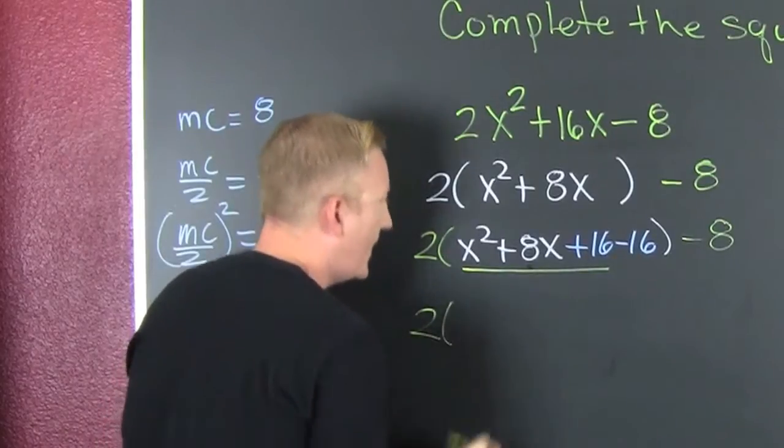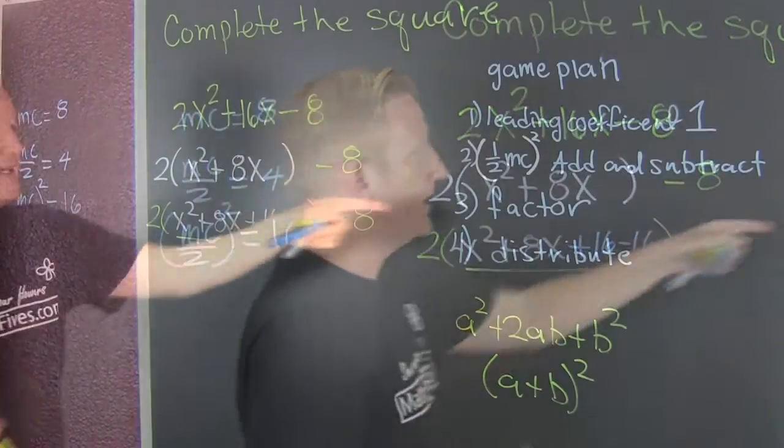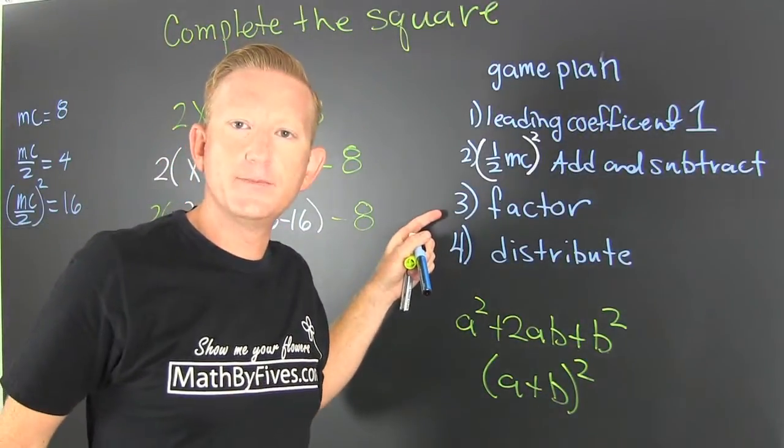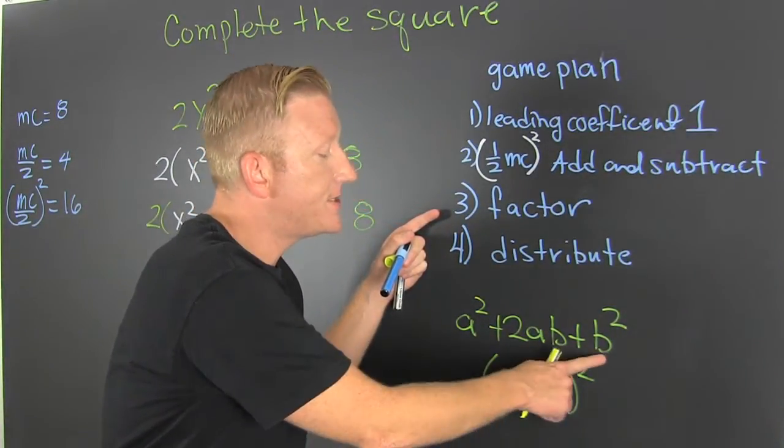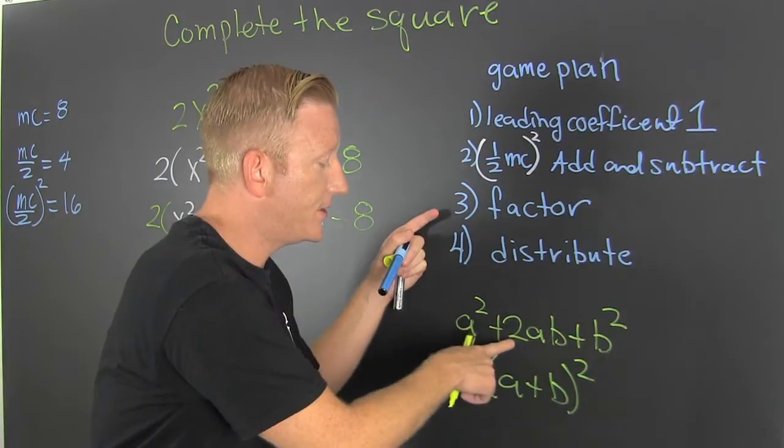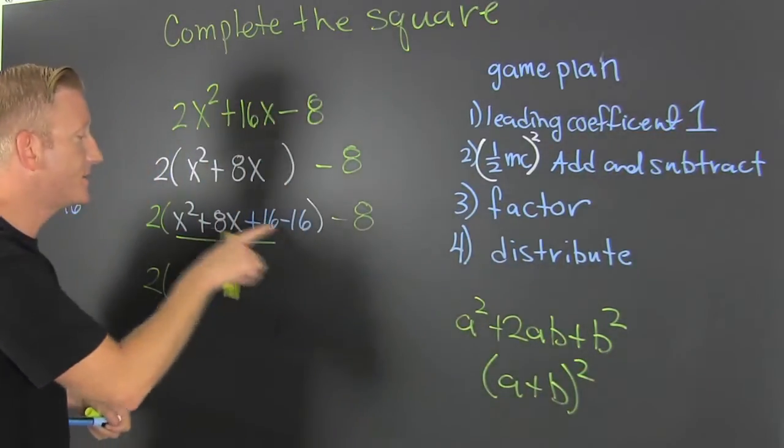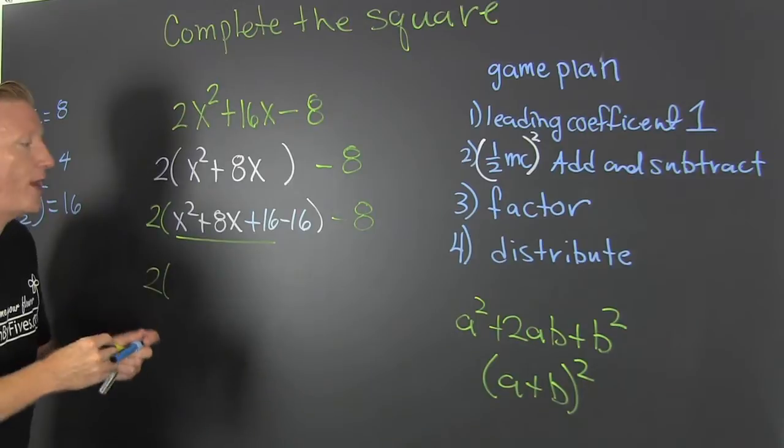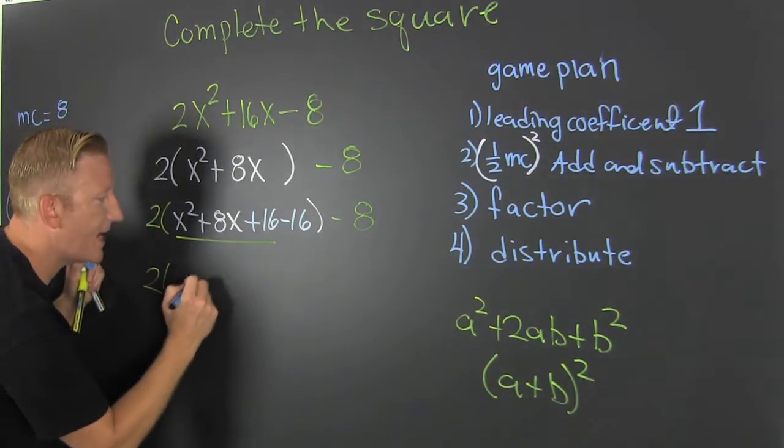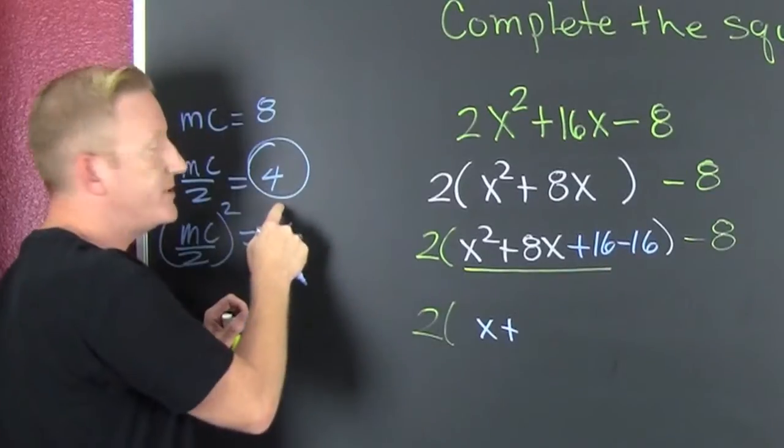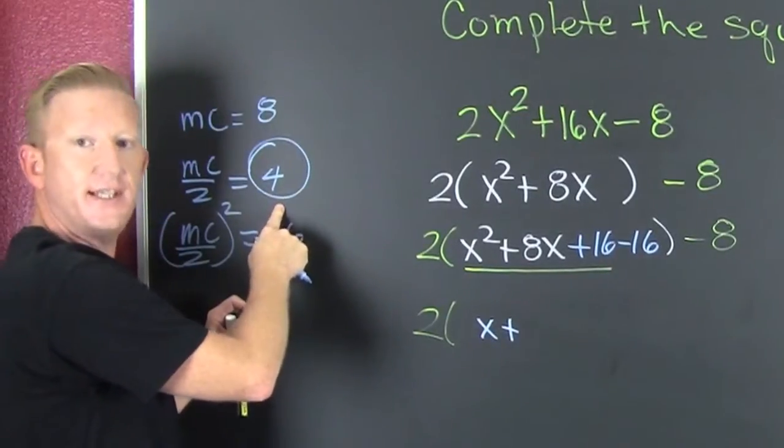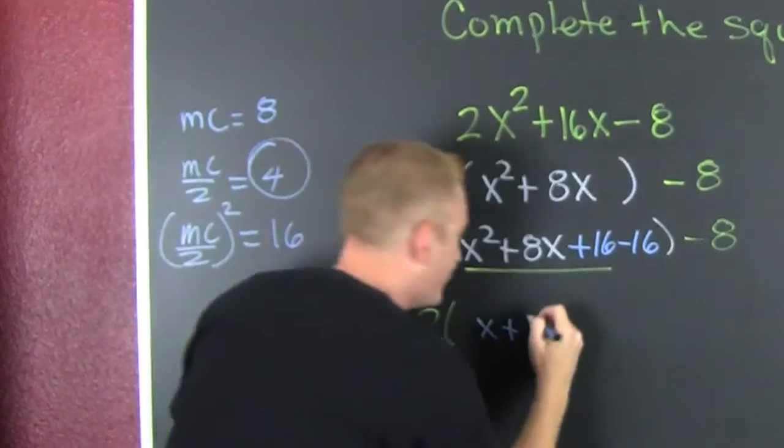This is two times - this is the part where we're factoring. We're factoring that perfect square. It's the square of this doubled. That's x plus what? The middle coefficient over 2. Every single time. 4.